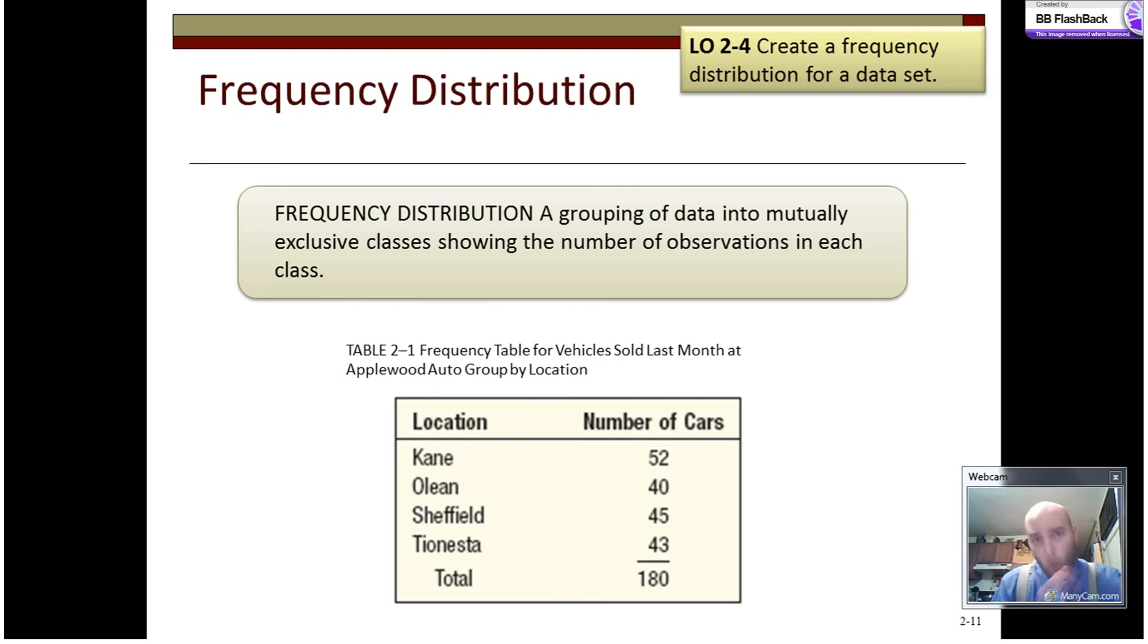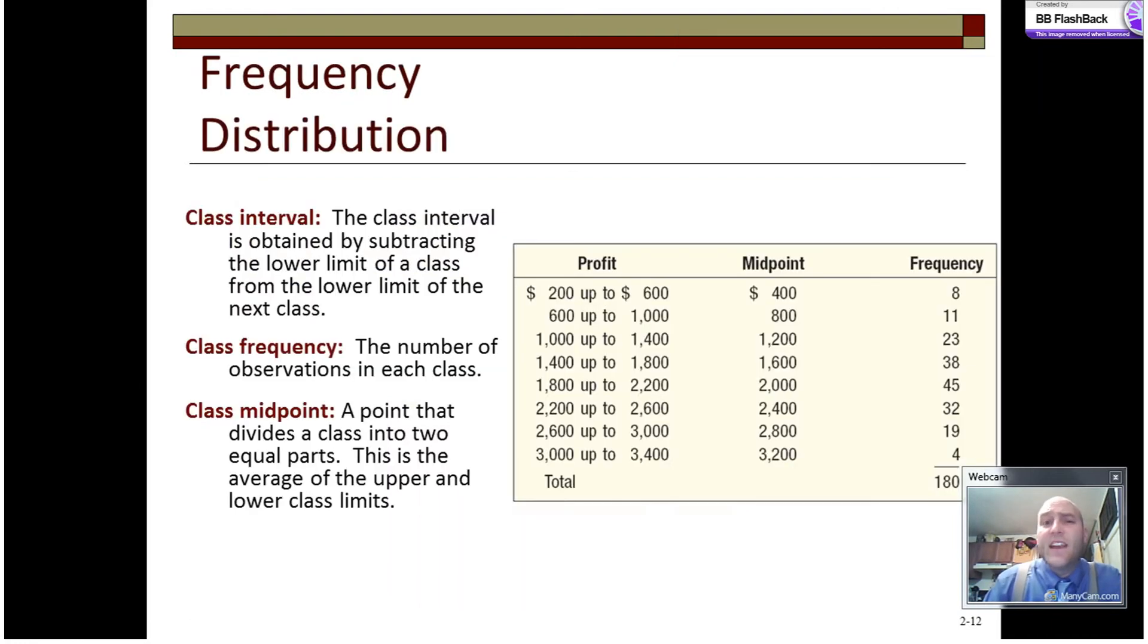Moving on from qualitative data, which gets summarized in a frequency table, we can call a frequency distribution an extension of that, which is a grouping of data into mutually exclusive classes, showing the number of observations in each class. Excluding the word qualitative from this definition. Not a big deal, except that we're going to need to use quantitative data, which we'll see in just a moment. But as we can see with this one, it's the same data we had before. Frequency table and frequency distribution don't look that different.